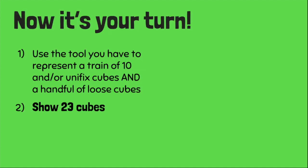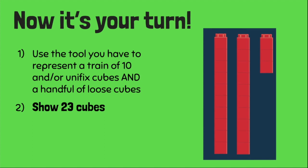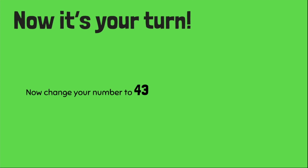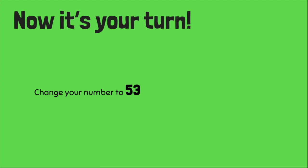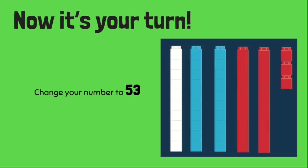Now it's your turn. You're going to use the tool that you have to represent a train of ten and Unifix cubes and a handful of loose cubes. You can also use the digital Unifix cubes. So show me twenty-three cubes. If you're doing this digitally, you're going to have to hit pause because it's going to take you a minute to build this. Did you show me two rows of ten and three more? If you did, fantastic. Now change your number to forty-three. How many of you found it easier to have trains made of ten — just four tens and three more? Show me fifty-three. Did you add another ten? Good job. Five tens and three.